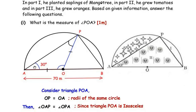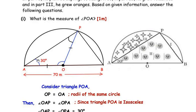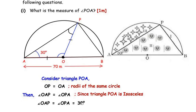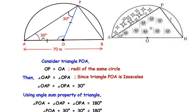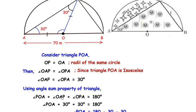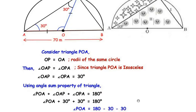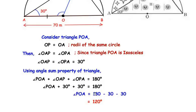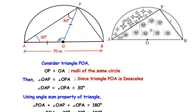Since triangle POA is isosceles with OP equal to OA, angle OAP equals angle OPA. The measure of angle OAP is given as 30 degrees, so angle OPA is also 30 degrees. Using the angle sum property: angle POA plus 30 plus 30 equals 180 degrees, giving angle POA equals 180 minus 30 minus 30, which is 120 degrees.